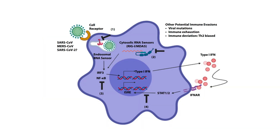If the virus were always defeated by this pathway we would have no infections, but that is not the case. The virus bypasses this predominantly by inhibiting type 1 interferon, NF-κB, and the JAK-STAT pathway. Additional mechanisms include viral mutation, immune exhaustion, and immune deviation by TH2 bias — these are the methods by which SARS-CoV-2 reduces the innate immune response.